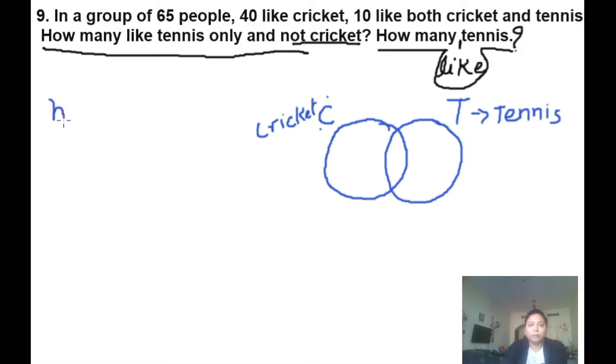We can write here number of people like cricket is 40. 10 like both, it means this area is common. This is called C intersection T. The number of people like both cricket and tennis, so this is 10.